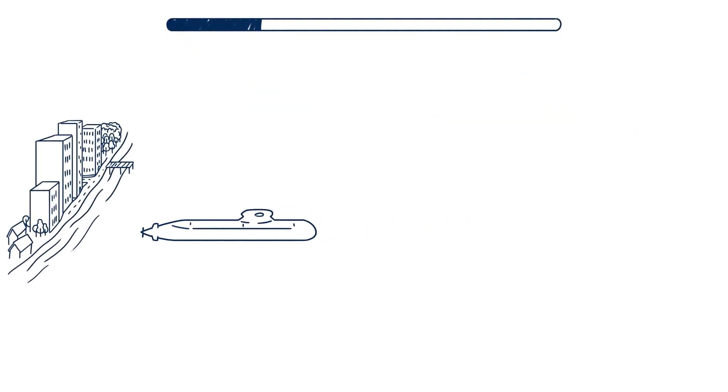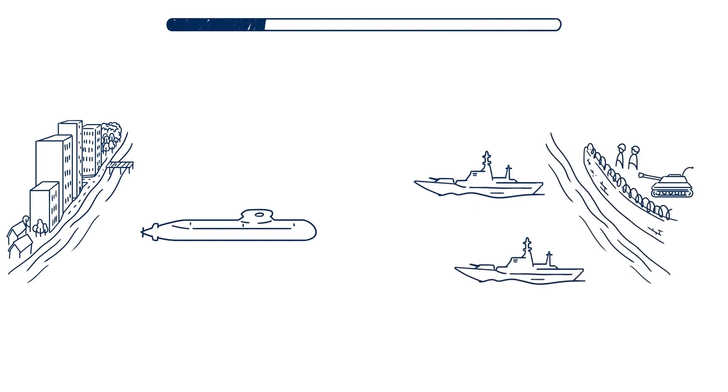In escalating conflicts, the enemy can't approach coastal areas without taking a major risk, not knowing where a submarine might operate.